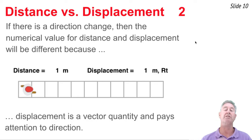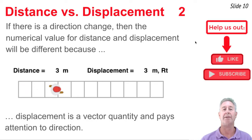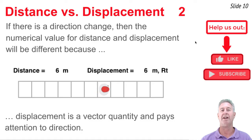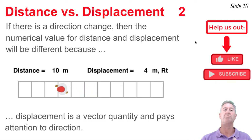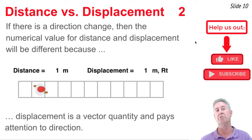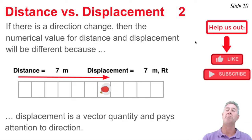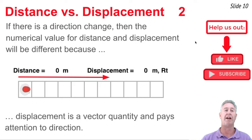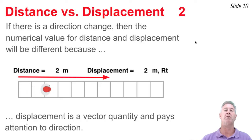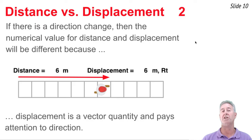Now we're going to look at a similar animation, but this time the person changes direction. If there is a direction change, we're going to notice that displacement and distance have different numerical values. As the person walks backwards, they undo some of the forward displacement — maybe walking 7 meters to the right, then 4 meters back to the left, causing the displacement to decrease. The overall change in position becomes less than if they walked in one direction, so displacement and distance have different numerical values because displacement pays attention to direction change.